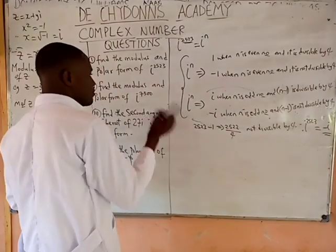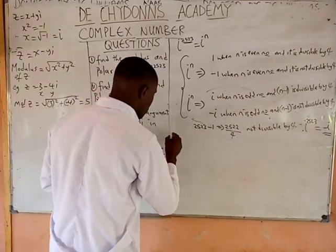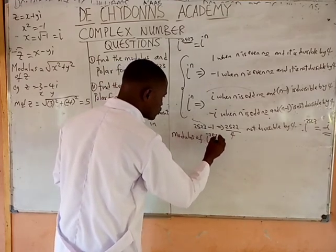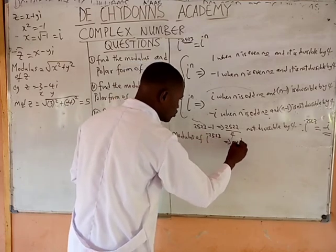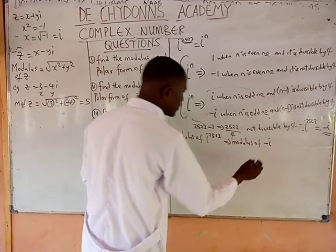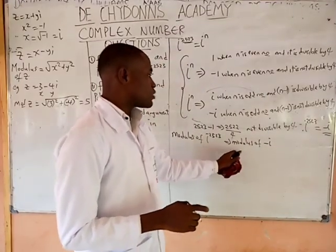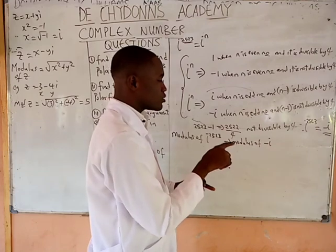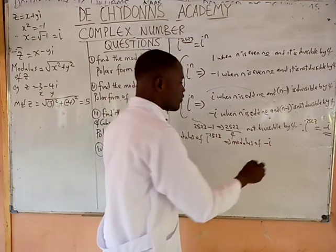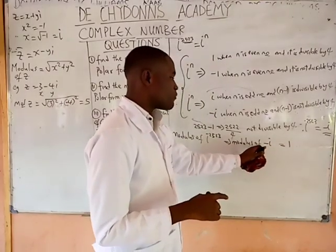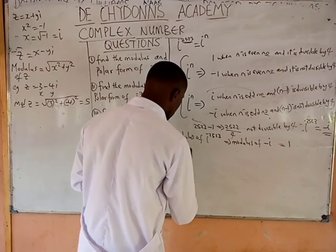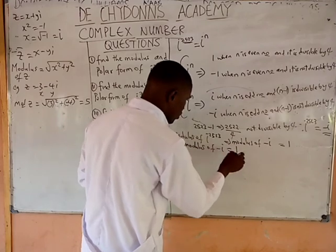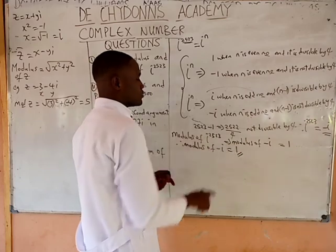Back to the question: the modulus of i raised to the power of 2523 equals the modulus of minus i. How do we get the modulus of minus i? Simply ask: what is the coefficient of i? It will be minus 1. What is the positive value of minus 1? It will be 1. Therefore, the modulus of minus i is 1, because the absolute value of minus 1 is 1.